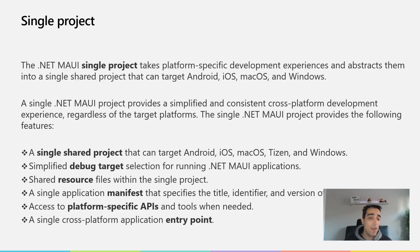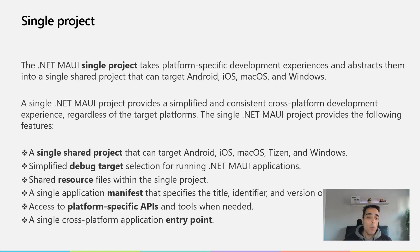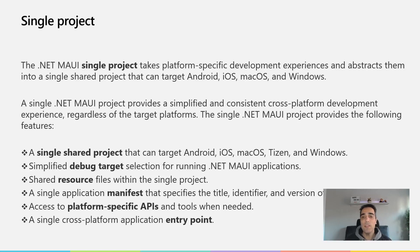It includes a simplified debug target selection for running .NET MAUI applications — we'll see that. We have an easy way to select in a combo box what the debug target is. We also have shared resource files within the single project, and a single application manifest to manage basic information like the title, the identifier, or the version.